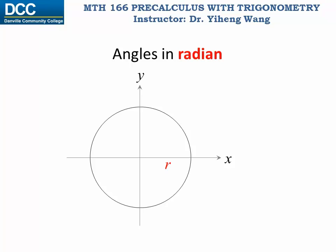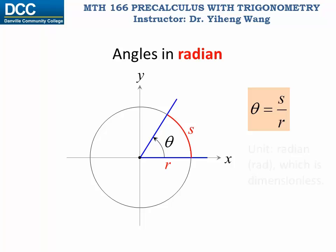Now let's draw our angle theta in its standard position, which means its initial side is along the positive half of the x-axis and its vertex is at the origin. As you can see, the two sides of angle theta intercept the circle by a piece of arc, and the length of this arc is s. Angle theta is defined as the length of the arc s divided by the radius of the circle r. Since both s and r have dimensions of length, the two dimensions cancel each other out; therefore theta is dimensionless, and this is angle theta measured in radians.